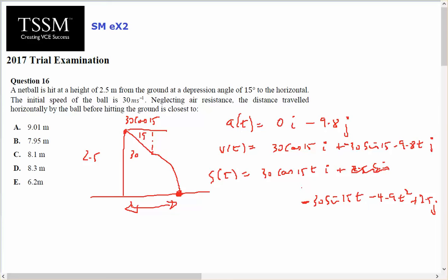Be careful about that because we have our angle of depression from the horizontal, so it's going to be measured away from there. I'm neglecting air resistance, at 30 metres per second. The distance travelled by the ball before hitting the ground is closest to: